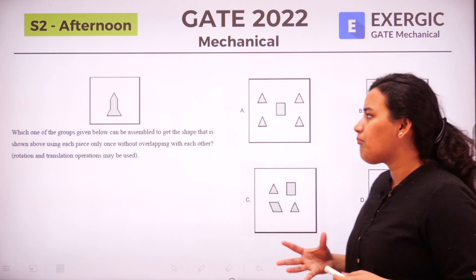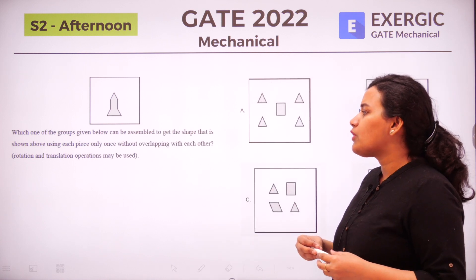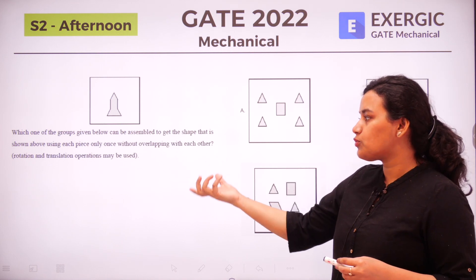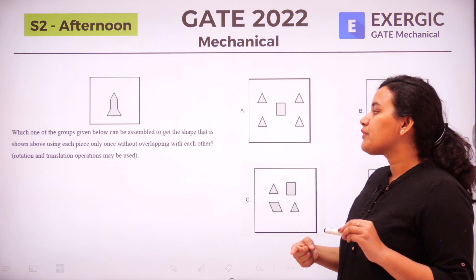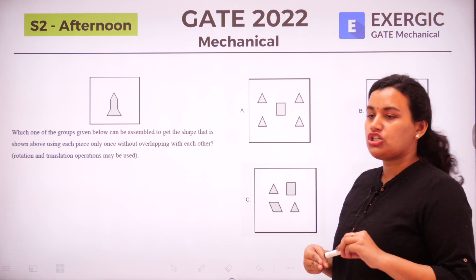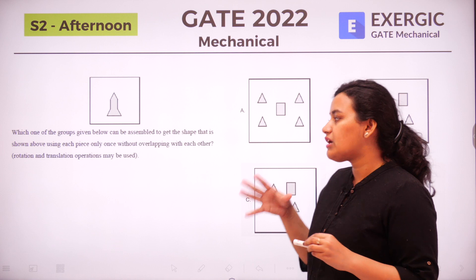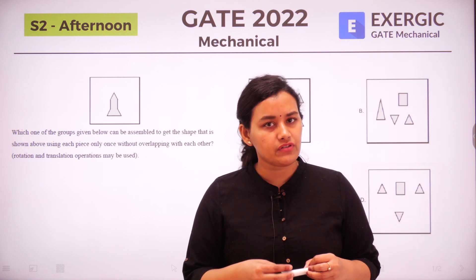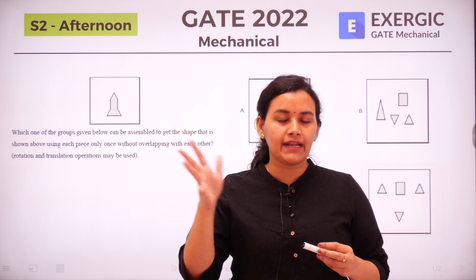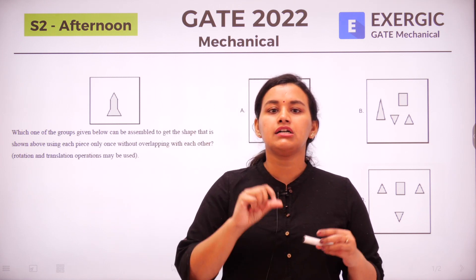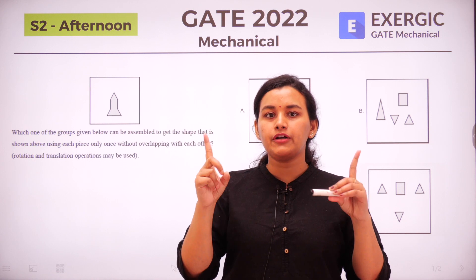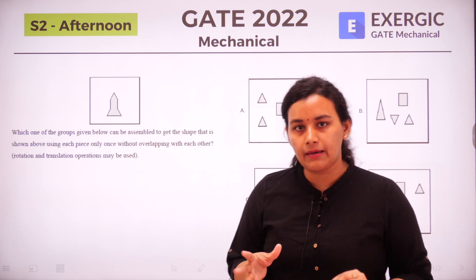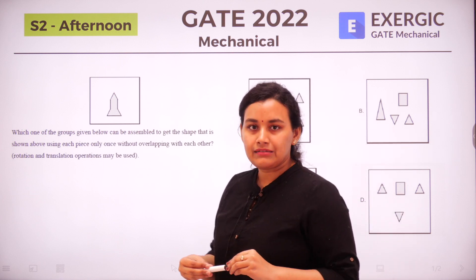It's a very simple assembling question: which one of the groups given below can be assembled to get the shape shown above, using each piece only once, without overlapping with each other, and rotation and translation operations may be used. Generally in assembly questions you can rotate and translate the figures but you cannot scale them — you can't make a particular figure smaller or bigger, but you can rotate and translate them.